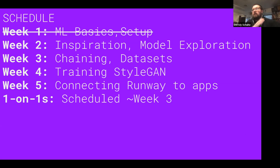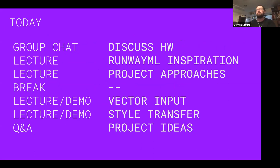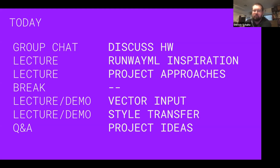Today we're going to look at using the vector input in Runway, which we touched on briefly at the end of last class, but we'll look at it more in depth. We'll talk about what vectors are in general, and then we're also going to look at style transfer — there are about eight different style transfer models inside Runway. We'll talk about how they work and look at the different aspects of each one. We'll kick off with a bit of group chat and then move into lecture and demos toward the end of class.